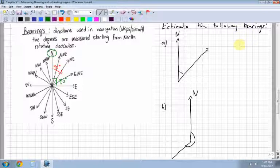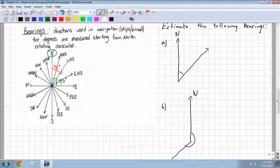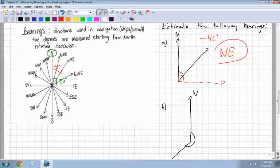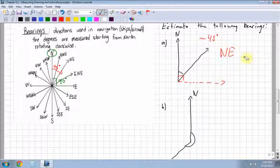So let's estimate the following using this bearing wheel. You won't be asked too many questions on this, and there won't be many questions on the provincial exam, but it is definitely good to know. Let's see here. It's actually close to, it looks like it's almost exactly, if I drew a line there and made 90, it's almost exactly half. So let's say that's about 45 degrees. That means it would be about northeast, would be the closest one, I would say.